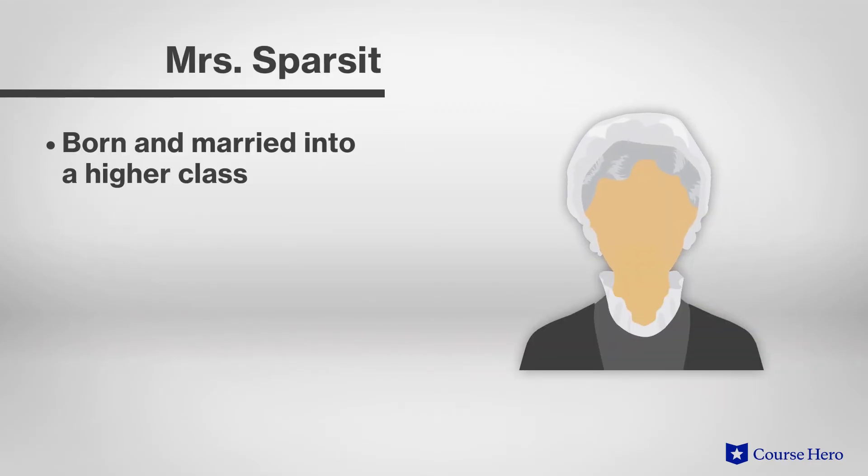Mrs. Sparsett was born and married within a higher class than her occupation, as Mr. Bounderby's housekeeper implies. She plots against Louisa, accidentally exposing Mr. Bounderby's fraudulent life story.